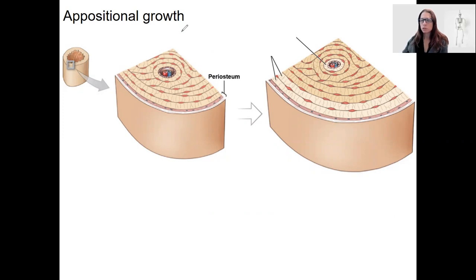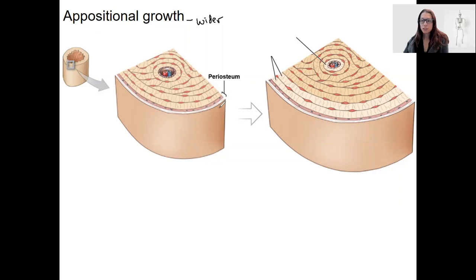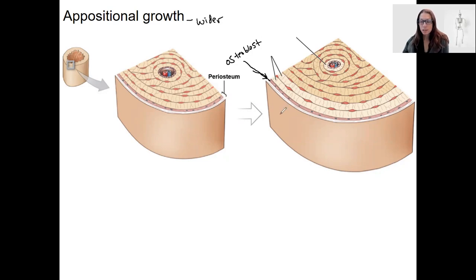In addition to growing longer, bones also need to grow wider as the body grows. Appositional growth is when bones grow wider. This occurs when matrix is added to the outside layers faster than it's being resorbed. This is going to be osteoblasts depositing bone on the outer edge of the bone tissue, causing additional rings to be added and making the bone wider. Bone diameter will increase as matrix is deposited onto that outer surface, the periosteum.